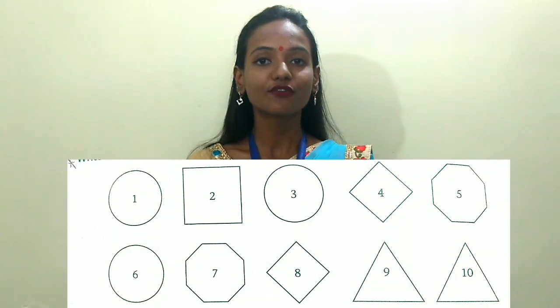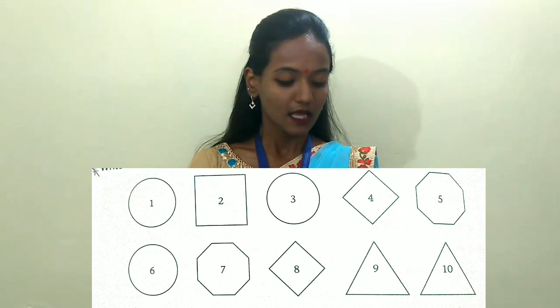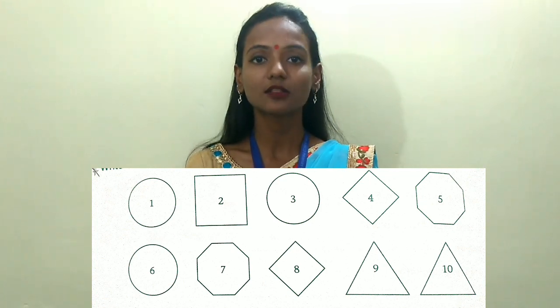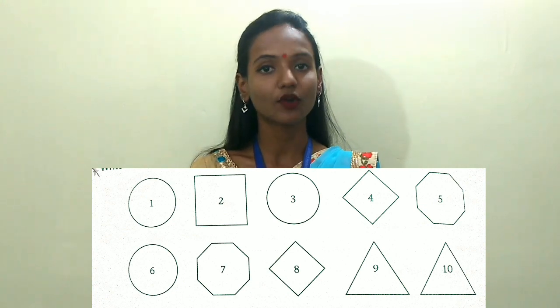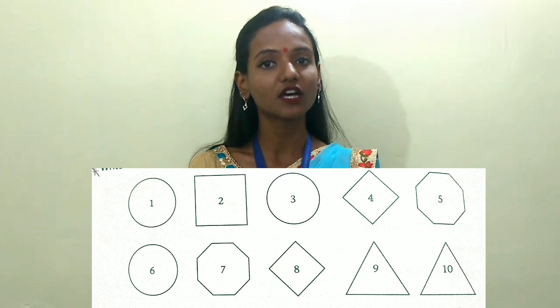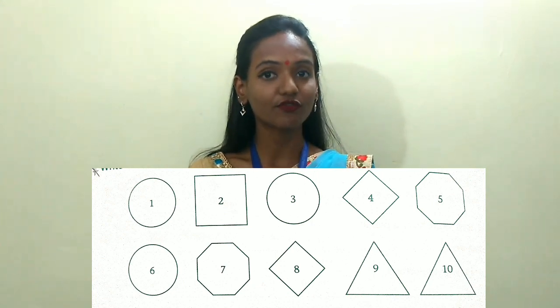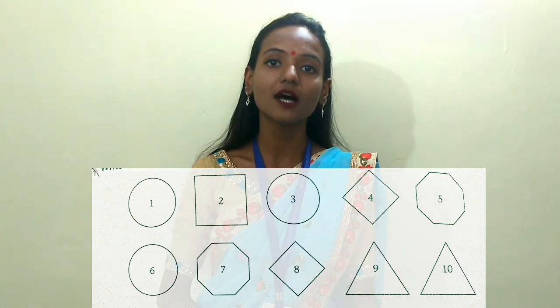To understand this, here is an example. You can see different shapes numbered differently. For example, number 1 is the same as number 3 because there is a similarity of the shape. But number 2 is different from number 1 because the shape of number 2 is entirely different from the shape of number 1.